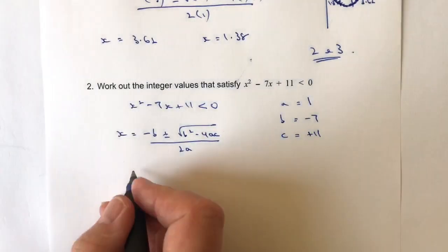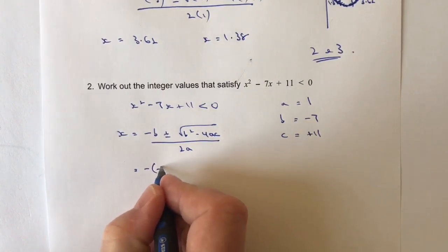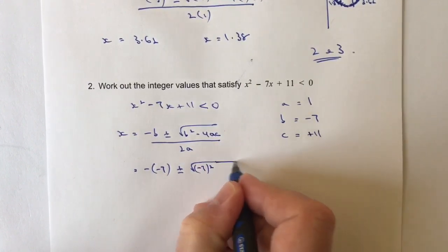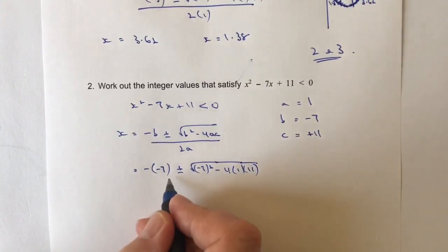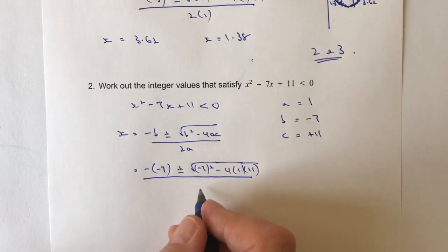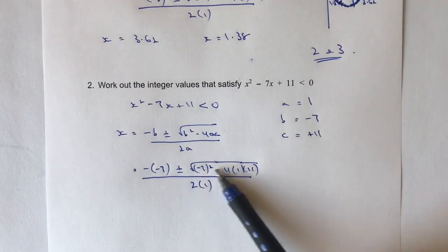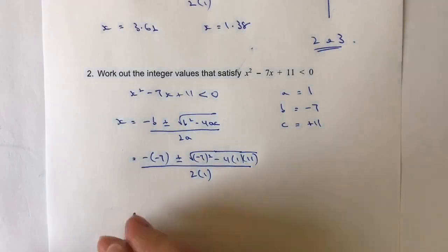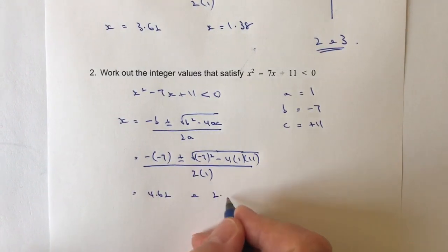So I've got a minus 7 here, so I've got to be careful — I'm going to get minus times minus 7, plus or minus the root of minus 7 squared, minus 4 times 1 times 11, and then I divide all of that by 2 times 1, which is 2. Popping that into my calculator, I get two values: x equals 4.62 and x equals 2.38.